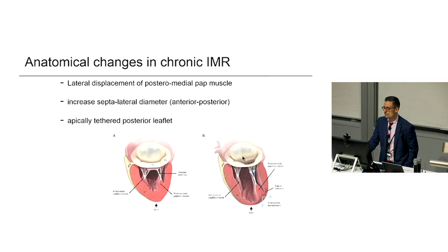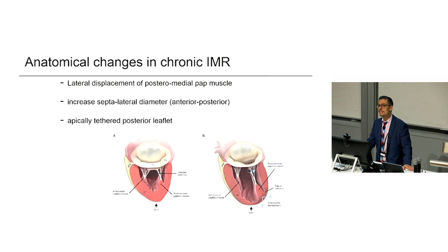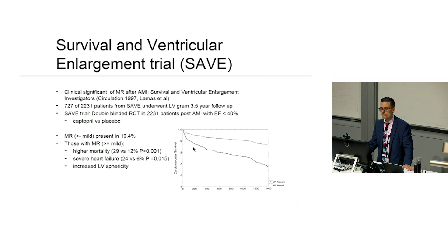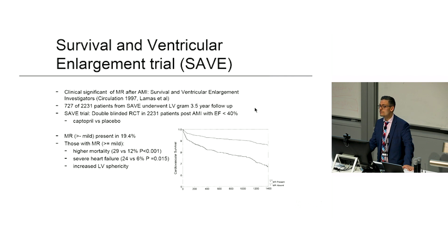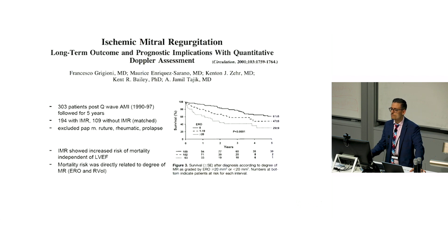A classic picture from Carpentier's book shows posterior infarction: the papillary muscle is pulled down, the cords are pulled down, you get tenting at the P3 area, and an increased AP diameter. The SAVE trial from 1997 was a randomized trial in post-infarct patients with poor ejection fraction comparing an early-generation ACE inhibitor versus placebo. In that subset, those with MR had much higher mortality, severe heart failure, and increased LV sphericity — confirming that ischemic MR is a serious problem.